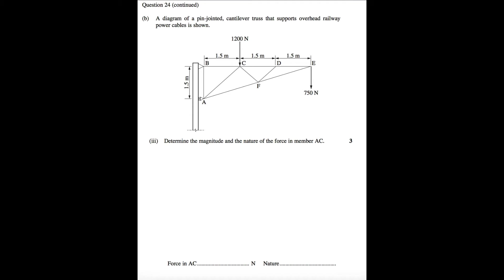In this edition of Eureka Engineering HSE solutions we will look at question 24b part 3 from the 2015 HSE paper. We are required to find the magnitude and nature of the force in member AC. To do this we will employ the method of sections. So let's begin.